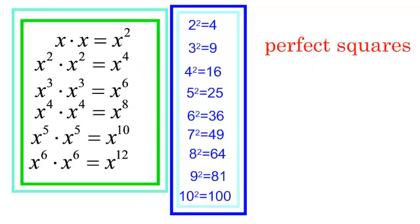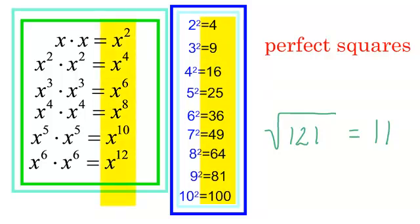So the main thing we learned in this video on simplifying radicals is how to recognize perfect squares. If I take the square root of 121 — 121 is perfect, it comes out from underneath the radical and it is 11. We learned how to recognize perfect squares with numbers and with variables.